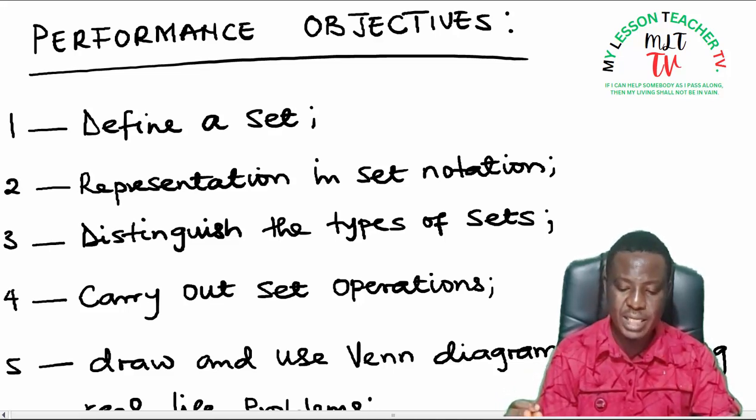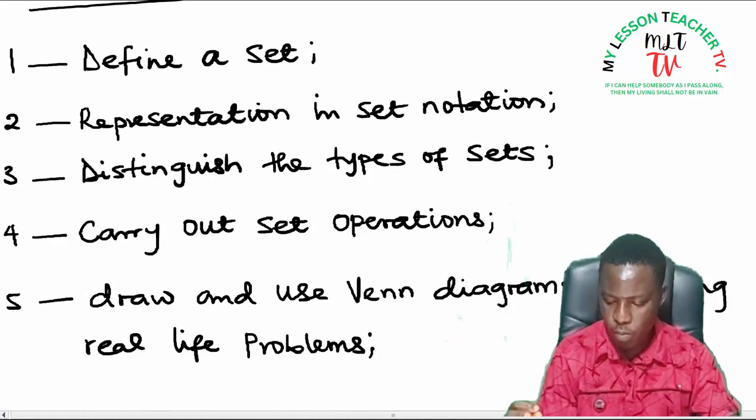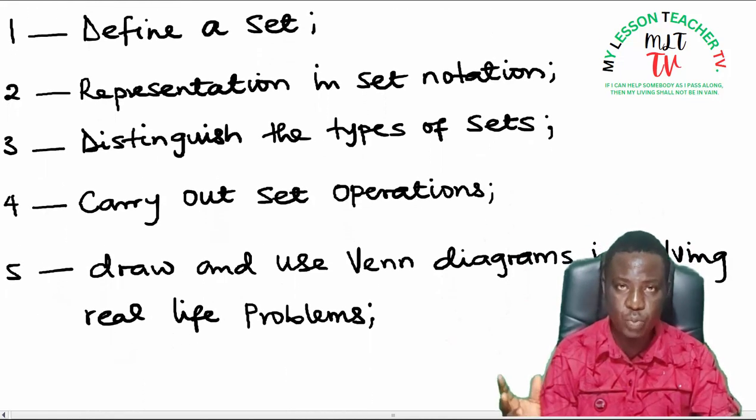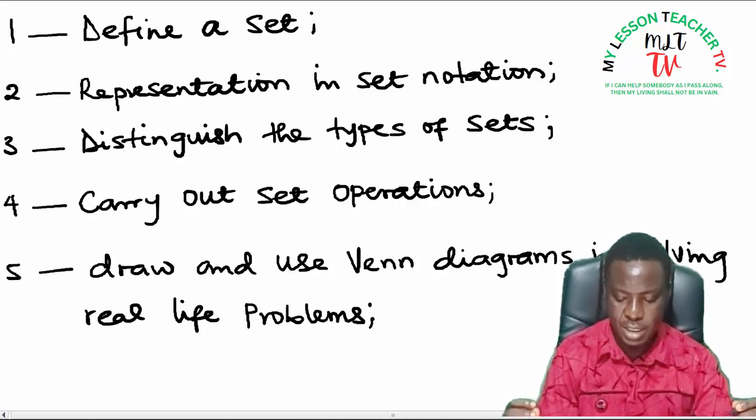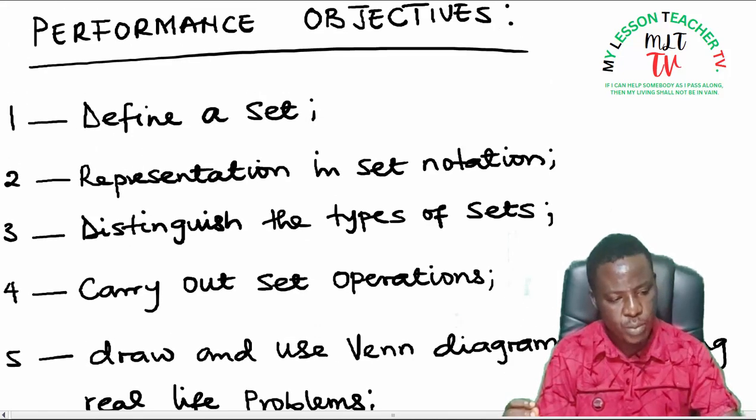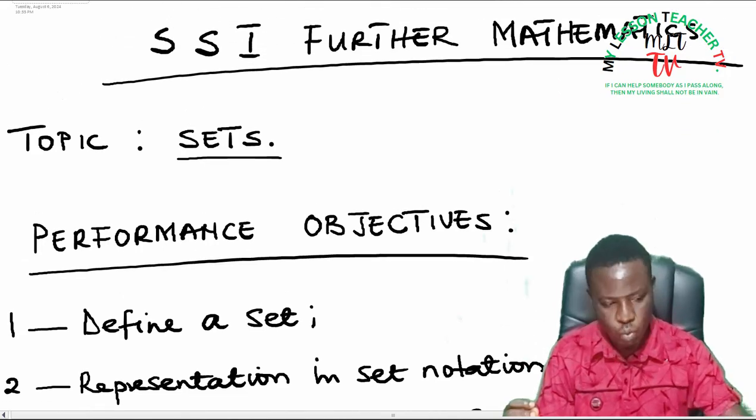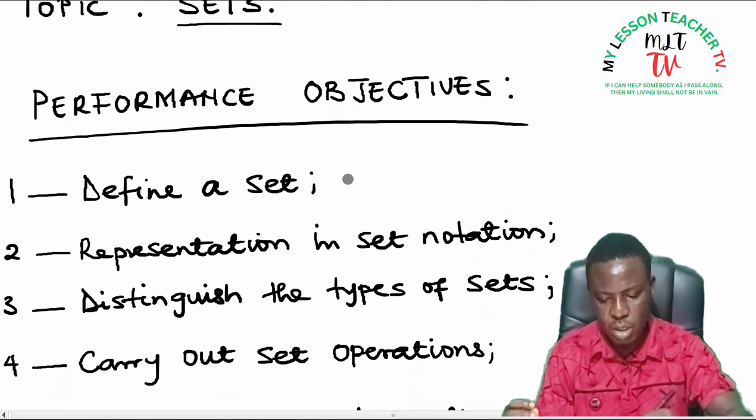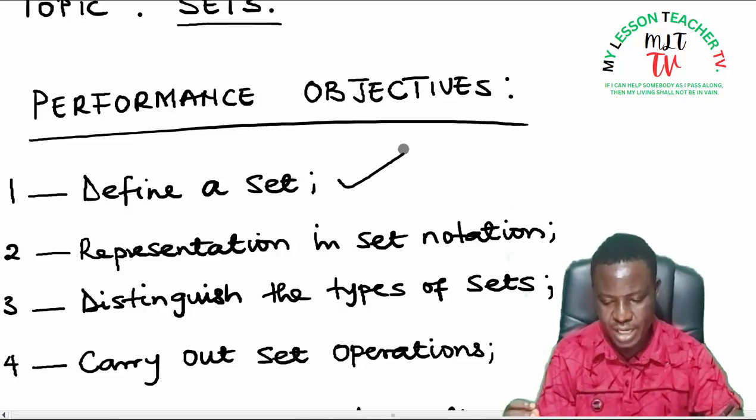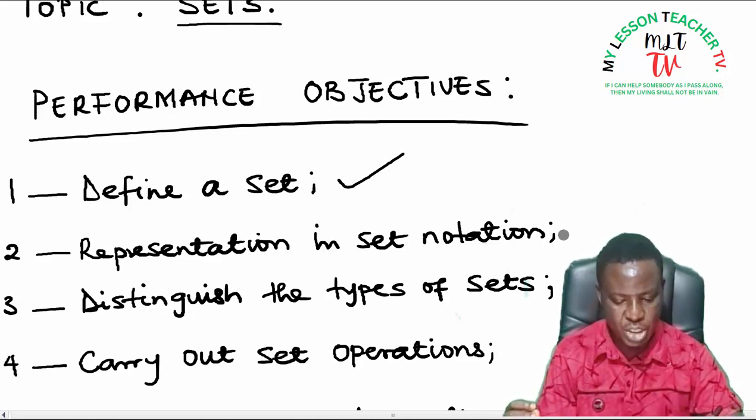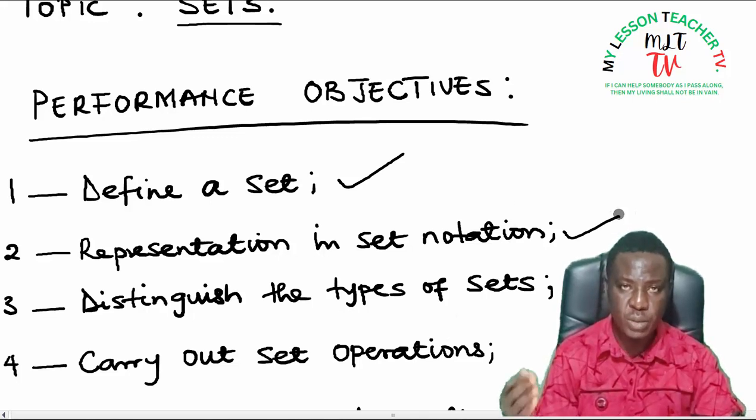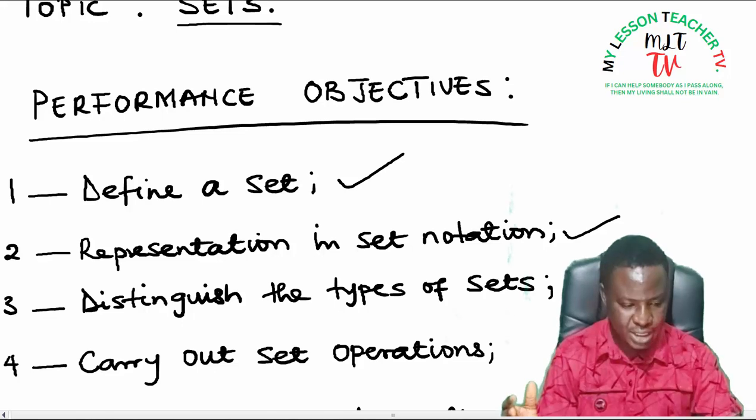The objectives include: one, definition of a set—you should be able to define a set; two, representation in set notation; three, distinguish the types of sets; four, carry out set operations; and five, draw and use Venn diagrams in solving real life problems. These we refer to as the application of sets. For the purpose of today's class we shall consider the first two objectives: define a set and representation in set notation. Subsequently we shall take other objectives.